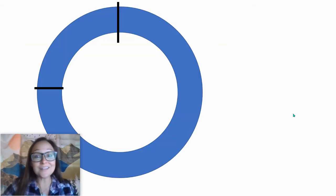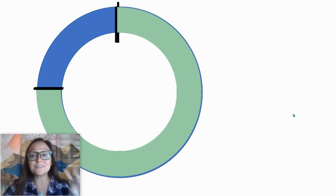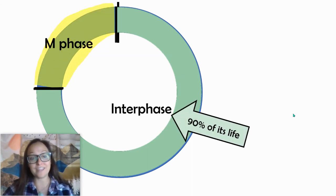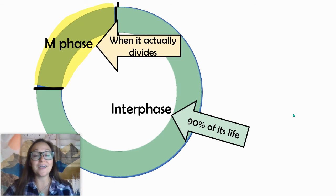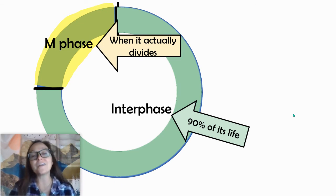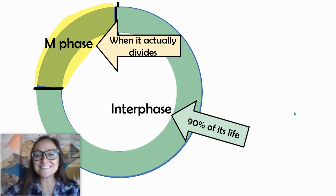So let's just summarize real fast. Our cell cycle is made of two phases: interphase and M phase. G1, S, and G2 are all part of interphase. And then my next video, we'll talk about M phase. All right, good job.